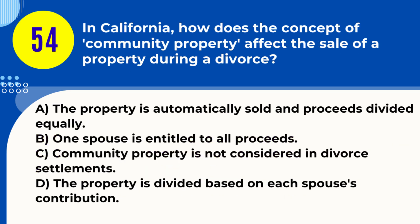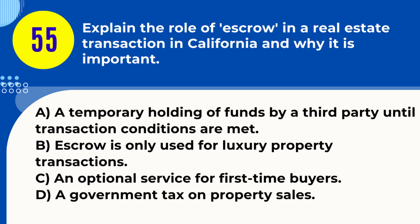Question 54. In California, how does the concept of community property affect the sale of a property during a divorce? A. The property is automatically sold and proceeds divided equally. B. One spouse is entitled to all proceeds. C. Community property is not considered in divorce settlements. D. The property is divided based on each spouse's contribution. Answer: A. The property is automatically sold and proceeds divided equally. Explanation: In California, community property, including real estate acquired during marriage, is typically divided equally between the spouses in a divorce, often involving sale and division of proceeds.